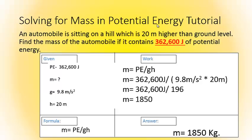So, we just solved for the mass of our automobile being 1,850 kilograms.